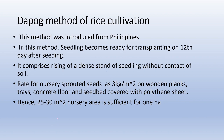Regarding the DAPOG method of rice cultivation: this method was introduced from Philippines. It involves raising a dense nursery of seedlings without contact with soil. The seedlings become ready for transplanting on the 12th day after seeding. Nursery sprouted seeds are spread at 3 kg per square meter on wooden planks, trays, concrete floors, or seedbeds covered with polythene sheet. Thus, 25–30 square meters of nursery area is sufficient for 1 hectare.